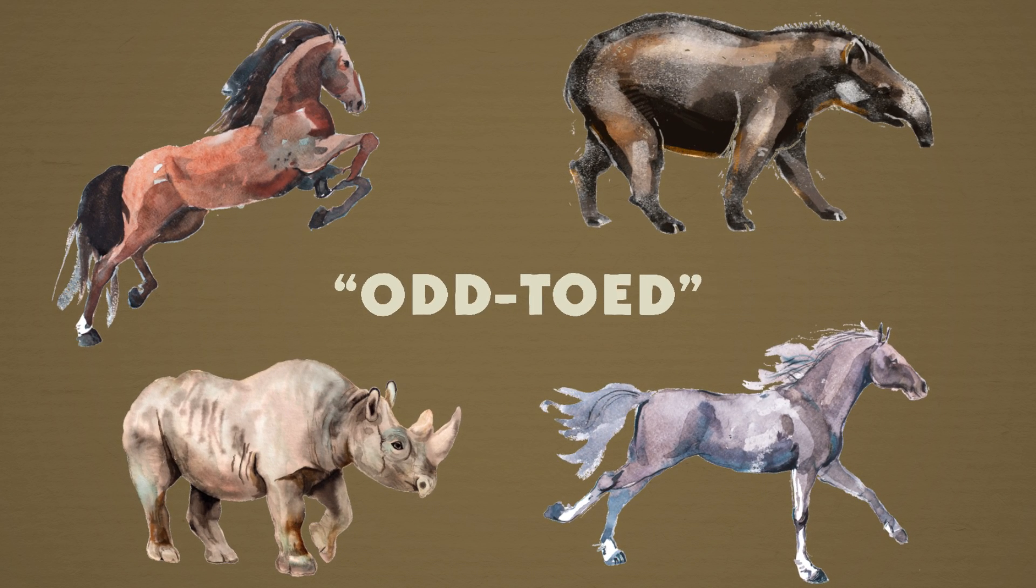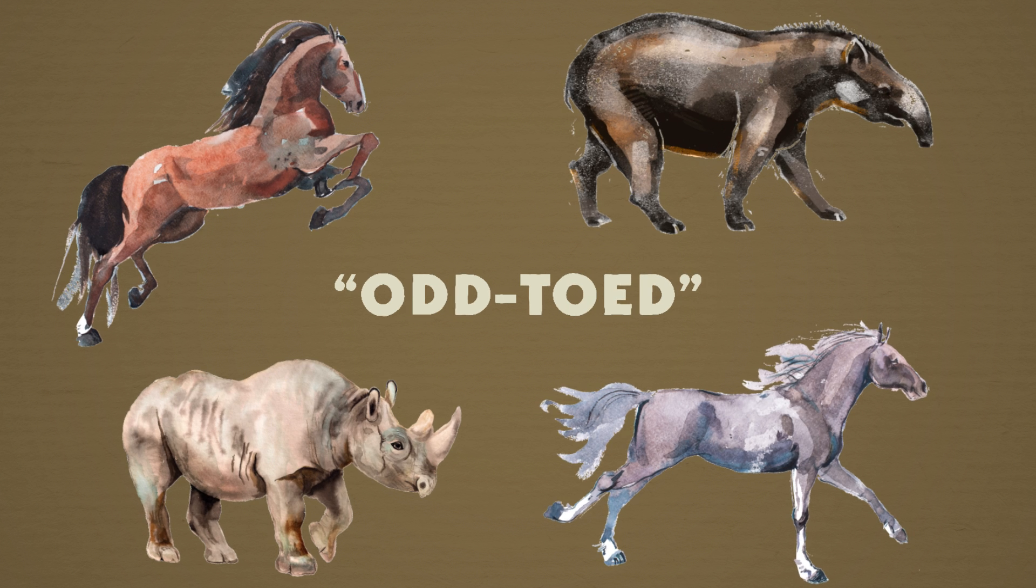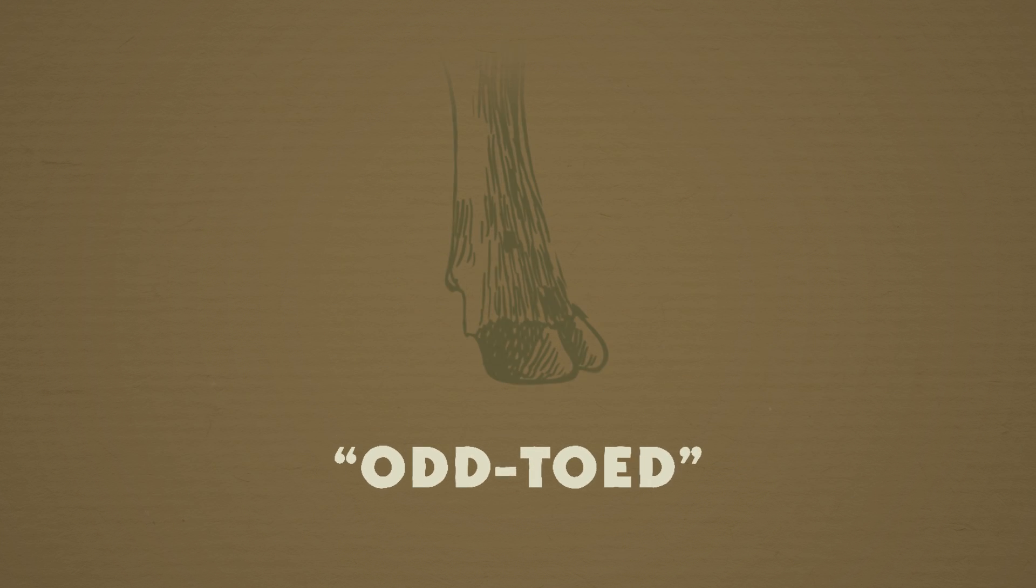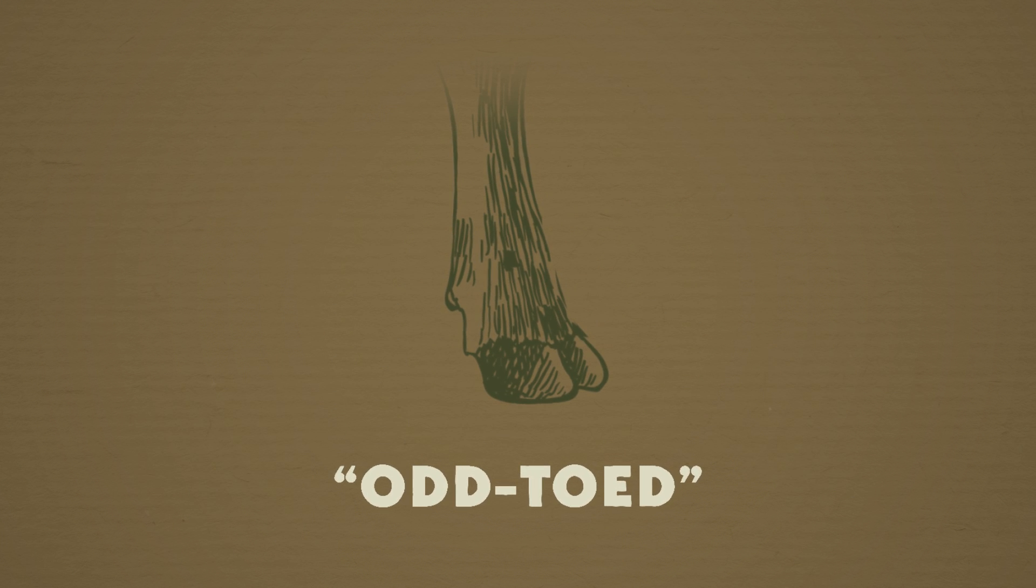Perissodactyl means odd toed, and like many other members of this group, early Chalicotheres had hooves, even though their hooves were split into two, which was kind of strange. But as the Eocene ended, Chalicotheres' hooves had been replaced with something new: claws. Now, claws on plant-eaters are rare. So rare, in fact, that the paleontologists who first found the feet of Chalicotheres thought they must have come from ant-eaters, or maybe giant pangolins.